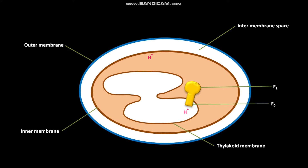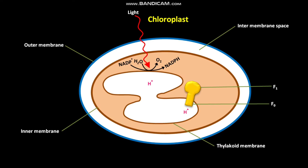Now let us discuss chemiosmosis in chloroplasts. In this case, the absorbed light energy is used to oxidize H2O to O2, or molecular oxygen. NADP+ is converted into NADPH. These reactions are coupled to the pumping of H+ ions from the stroma to the thylakoid lumen.